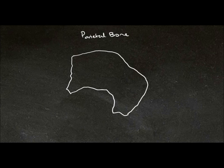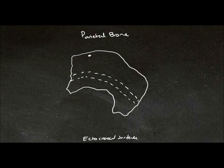So we'll look at the ectocranial surface, which is the outer surface. When you are dealing with isolated bones, it's always important to first orientate yourself — find out which is the top, which is the bottom, which is lateral, and which is medial. Also, which is the outside of the bone and which is the inside of the bone. So to do that, we'll have a look at the borders.